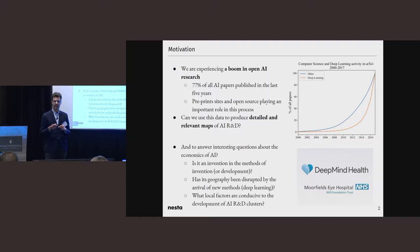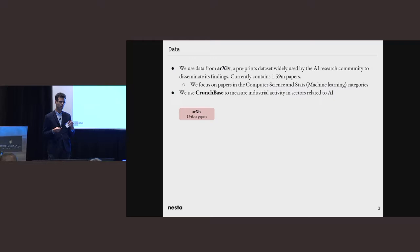Maybe a way to think about this is when DeepMind Health starts to explore how to apply deep learning methods in health, they go and collaborate with a hospital in London, which is where they were based instead of collaborating with a hospital in Newcastle or Toronto. We want to get a handle on those dynamics. To do this, we're going to be looking at ArXiv data. We're going to be very focused on deep learning, which is the technique that's really revolutionized AI research in recent years. ArXiv is a preprints data website widely used by the AI research community, currently contains 1.6 million papers. We're focusing on the papers related to computer science and statistics machine learning.